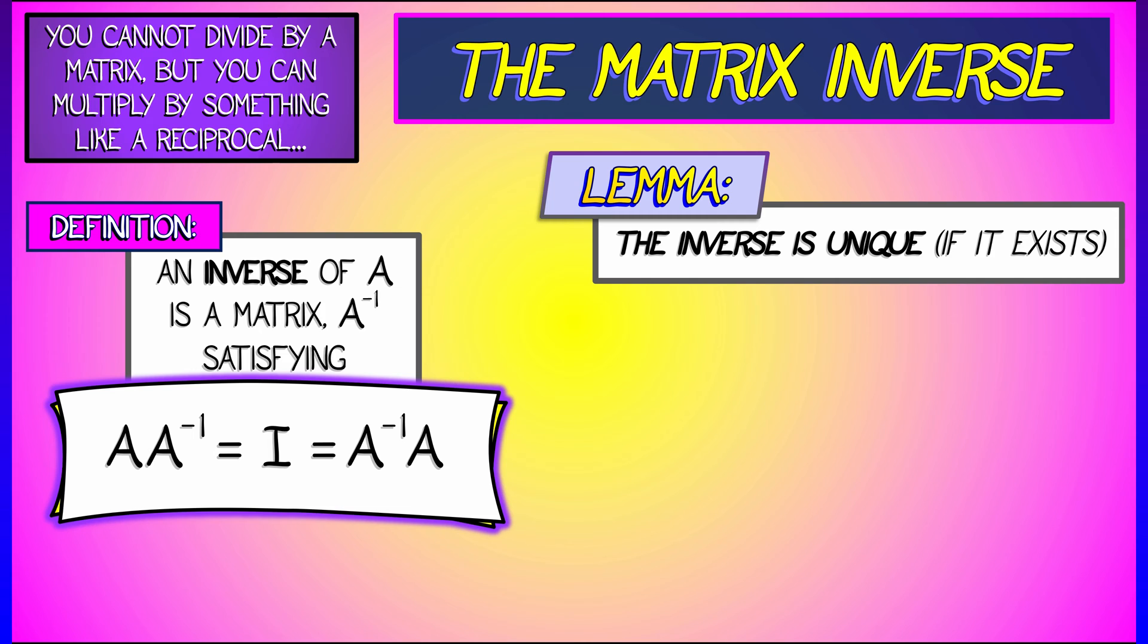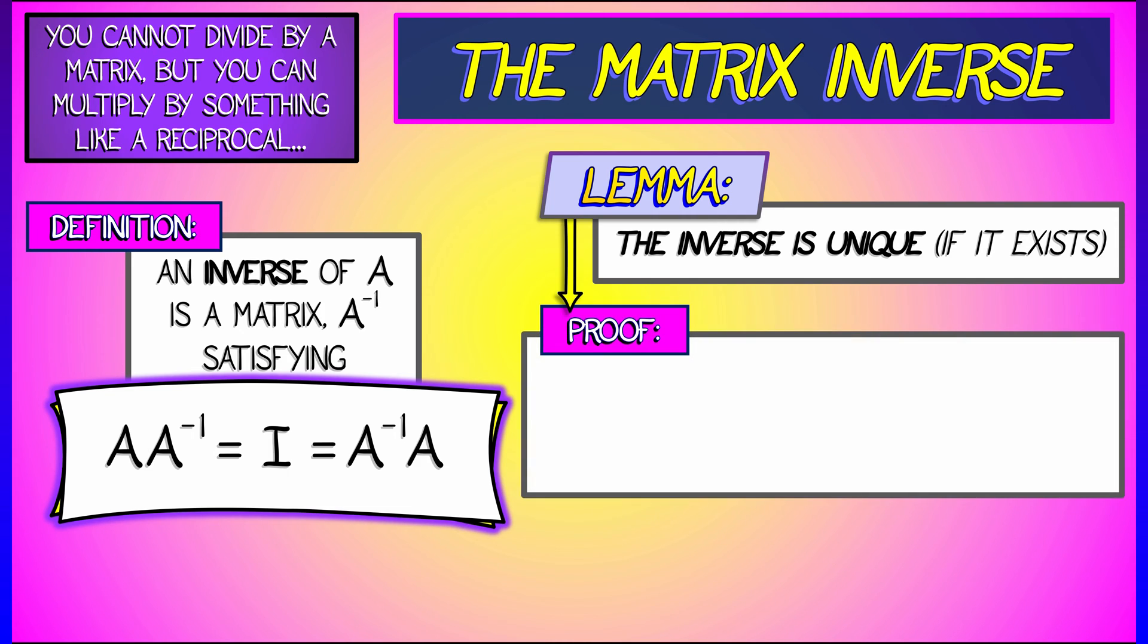That seems kind of weird how to prove something like that. Well, let's assume that there were two inverses. Let's call them B and C so as not to confuse them. So B and C both satisfy the condition for the matrix inverse. What we're going to do is show that B and C are in fact the same matrix. And we're going to do that through the following reasoning.